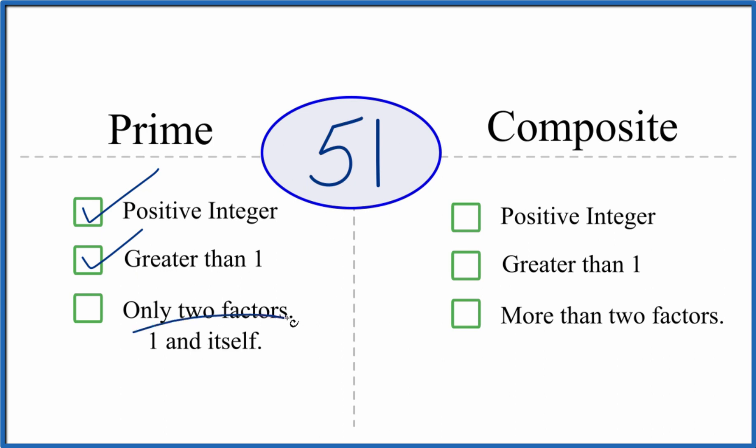And are there only two factors, 1 and 51, that go evenly into 51? Well, we know that 1 times 51, that's 51. So there's 1, 2 factors. But are there any more?